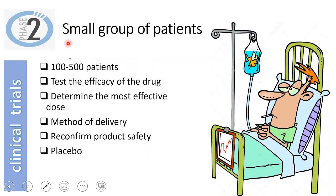In phase two, the drug is tested on a small group of patients not exceeding 500, who should also be volunteering. This aims to test the efficacy of the drug, determine the most effective dose and method of delivery — whether tablets or intravenous — and reconfirm product safety by monitoring volunteers for side effects. In phase two, placebo is used. A placebo looks like a drug but does not contain the active ingredient, which eliminates any psychological effect of taking a drug.